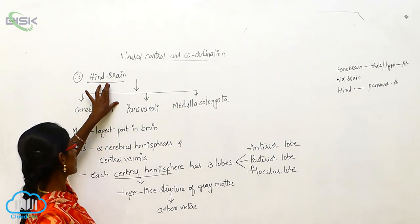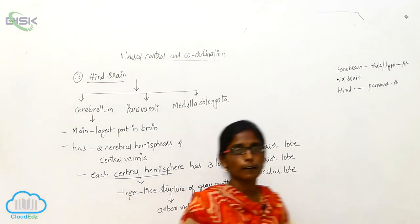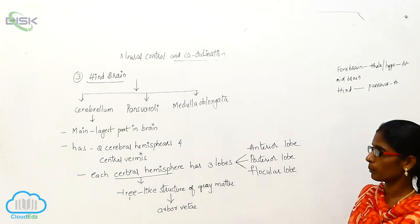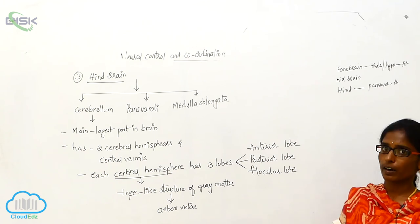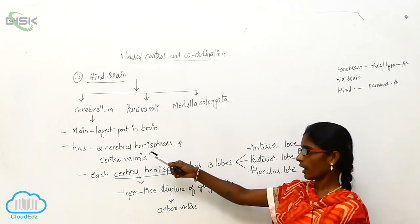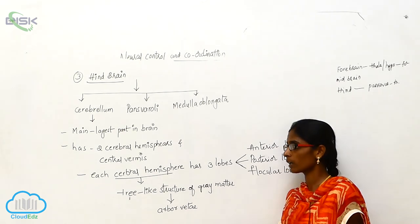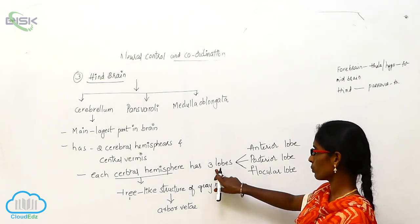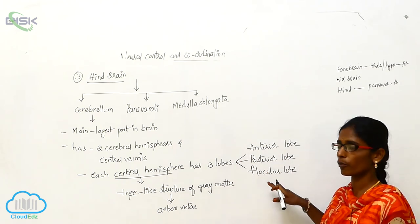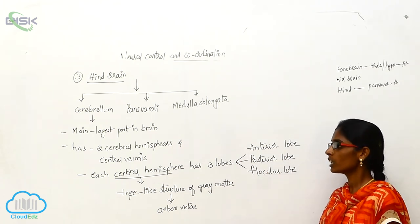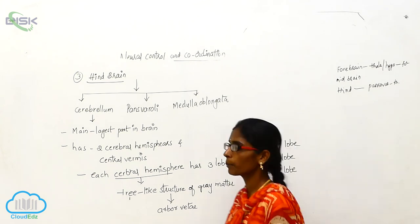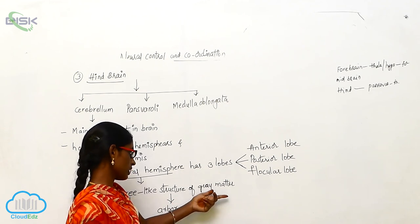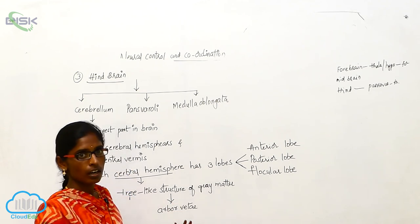To summarize: the hindbrain divides into three parts — Cerebellum, Pons Varoli, and Medulla Oblongata. The Cerebellum is the main and largest part of the brain, with two cerebral hemispheres and a central vermis. Each cerebral hemisphere has three lobes: anterior, posterior, and floccular. The cerebral hemispheres have a tree-like structure of grey matter called Arbor vitae.